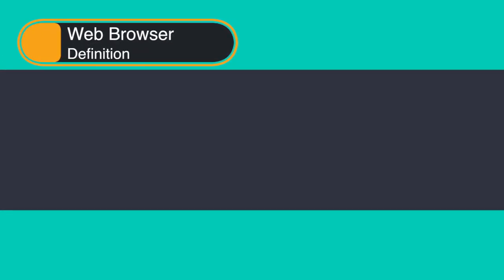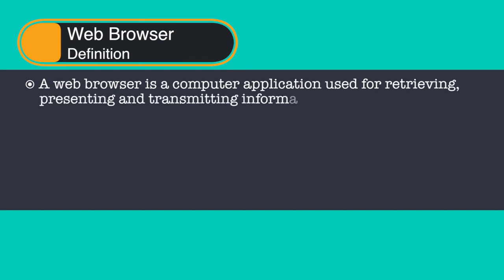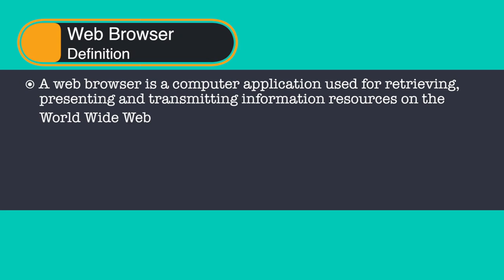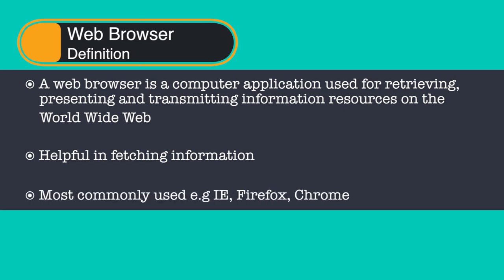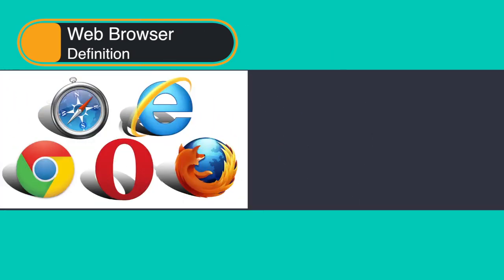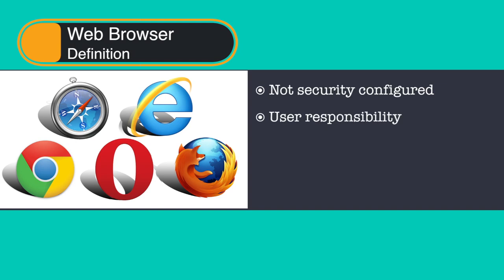A web browser is a computer application used for retrieving, presenting and transmitting information resources on the World Wide Web. It is also helpful in accessing information provided by web servers and other infrastructure devices within private networks or files in a file system. The most common web browsers are Windows Internet Explorer, Microsoft Edge, Mozilla Firefox and Google Chrome. Web browsers are among the most commonly used applications on a computer, and those which come with the operating system do not normally have security features configured by default — therefore it is up to you to enable the security options.